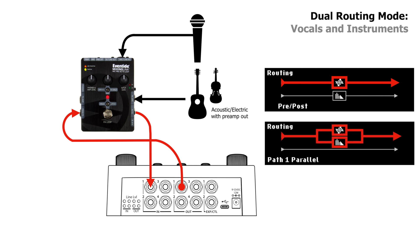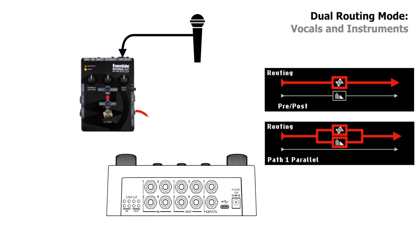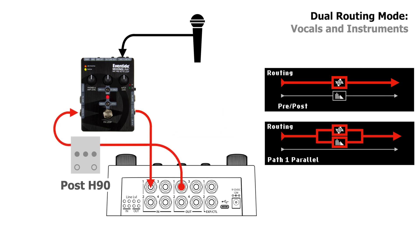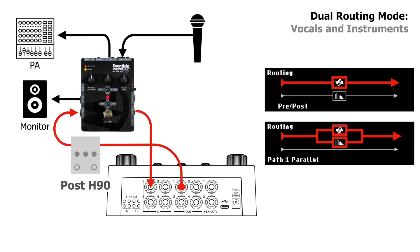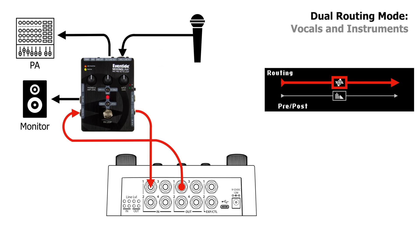There are many benefits to using the Mixing Link in this manner. Since the H90 in dual mode does not provide inserts — because all available I/O are used to connect two distinct signal paths — the Mixing Link allows us to incorporate other effects in its effects loop before or after the H90's effect path externally. The Mixing Link can also direct signal to two different places: from the two-amp output to a personal monitor or amp, and from the DI line XLR connector straight to the PA. Additionally, the Mixing Link has three onboard options for mixing the effects loop with the dry signal. We still have path 2 available for another instrument.